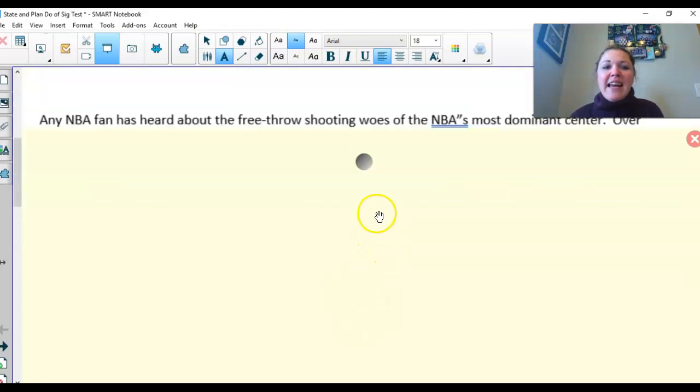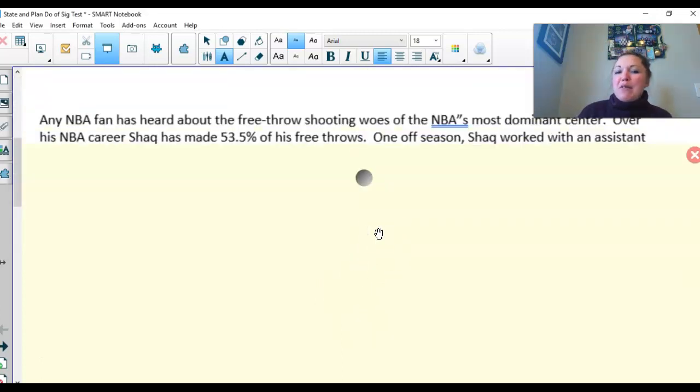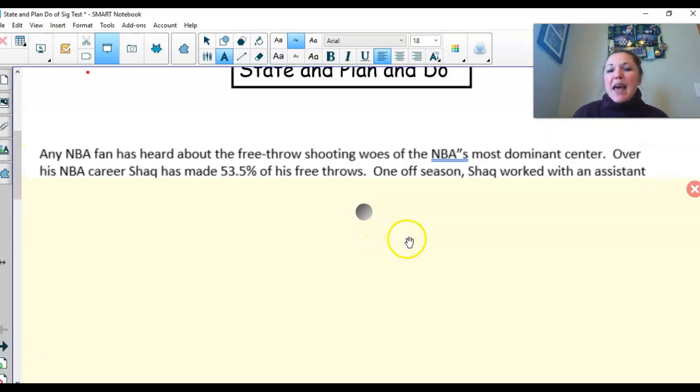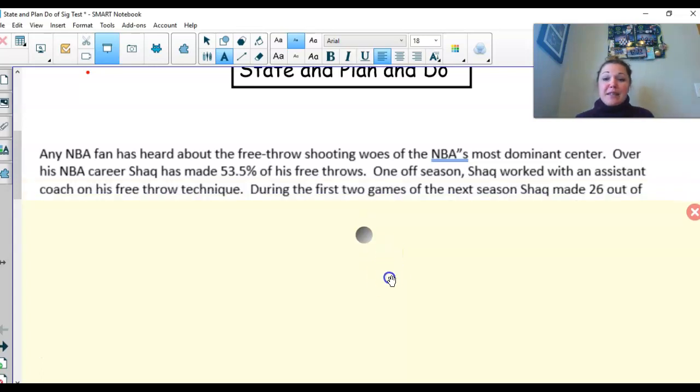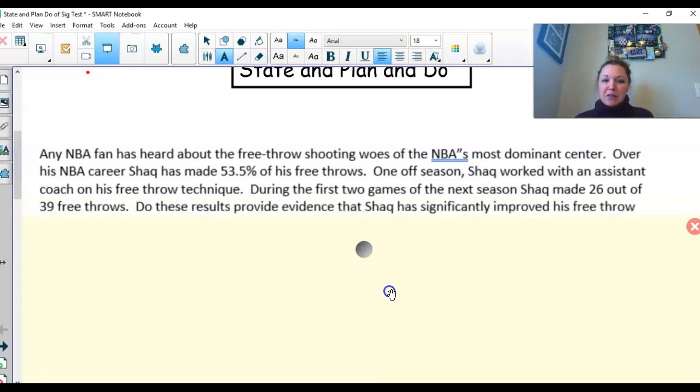Our problem we have today: any NBA fan has heard about the free throw shooting woes of the NBA's most dominant center. Over his NBA career, Shaq has made 53.5% of his free throws. One offseason, Shaq worked with an assistant coach on his free throw technique. During the first two games of the season, Shaq made 26 out of 39 free throws. Do these results provide evidence that Shaq has significantly improved his free throw shooting?